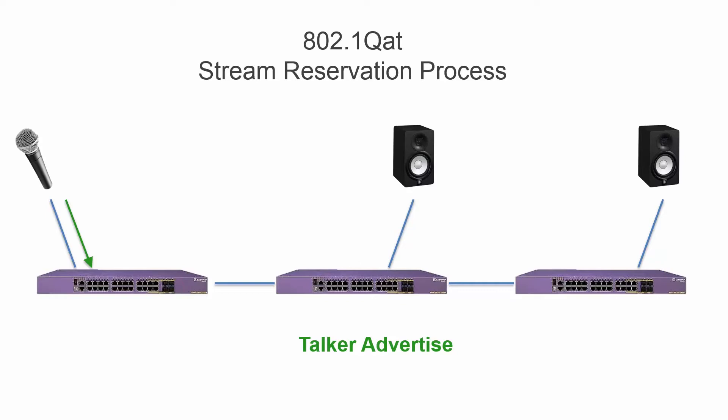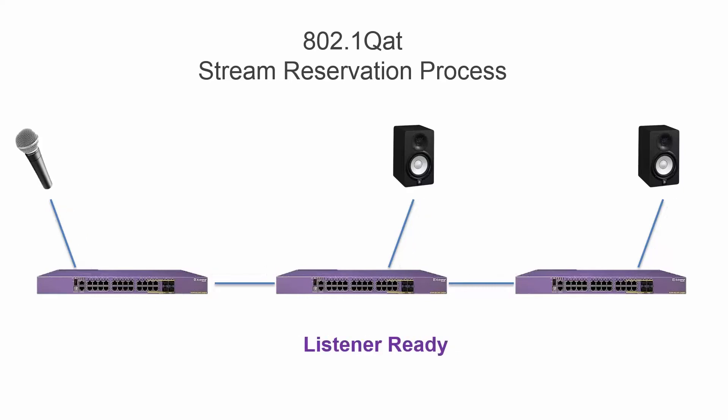All switches network-wide become aware of the streams available and the bandwidth those streams require. Now imagine a listener would like to receive a stream on the network. That listener can simply request to receive the stream from the nearest switch. The switch will then determine if there is sufficient bandwidth available for that stream to exist without overrunning the ports required for the transfer.